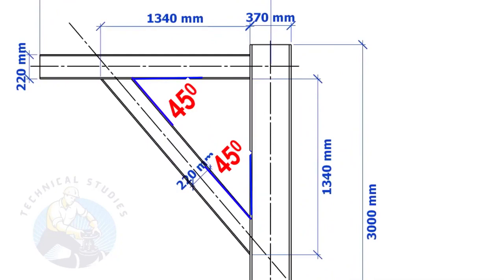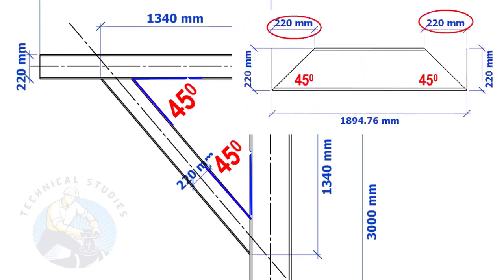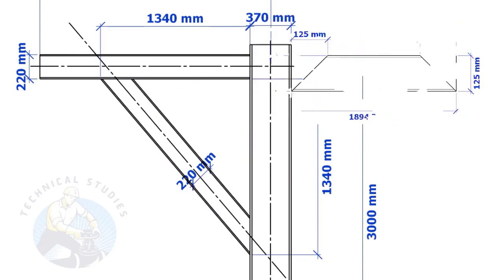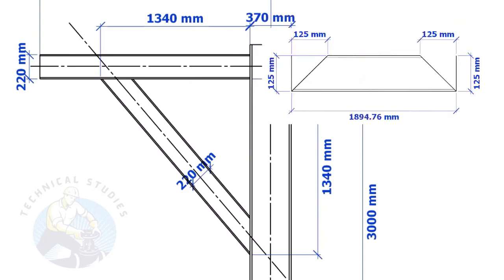Here, the size of the beam is 220 mm, so the cutback will also be 220 mm. Suppose the width of the bracing is 125 mm, then the cutback will also be 125 mm. This means if the included angle is 45 degrees, the cutback will be the same as the bracing width.